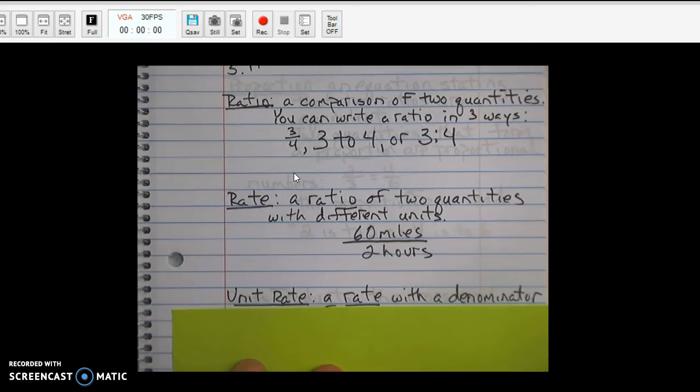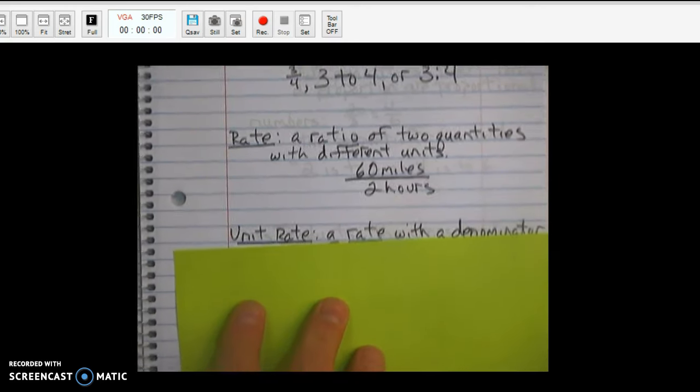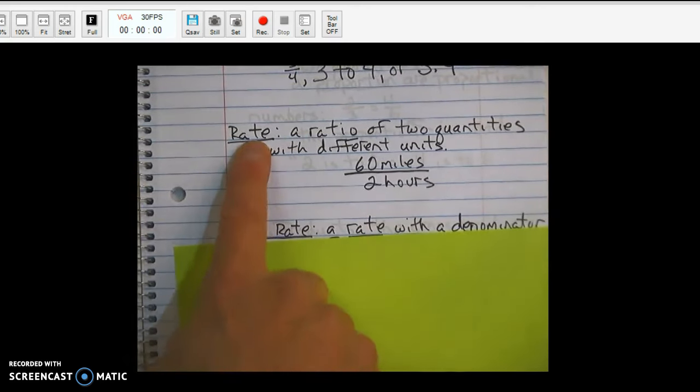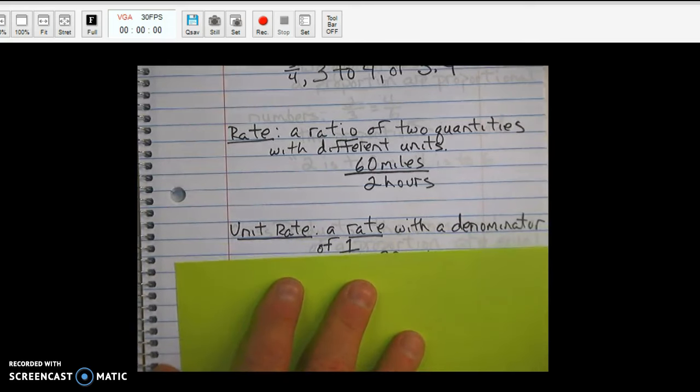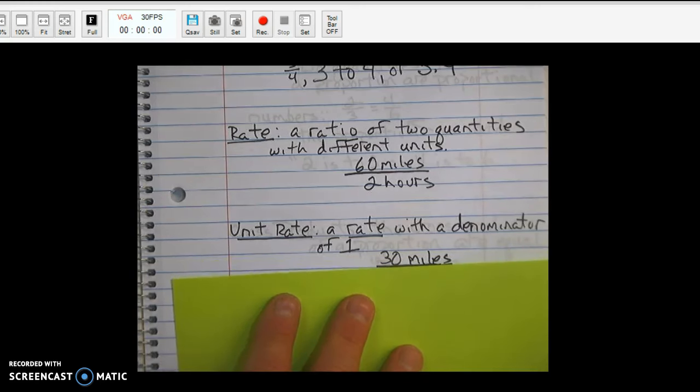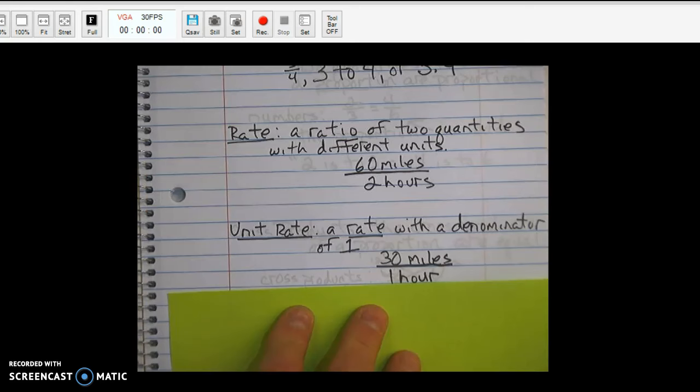Our third term. Unit rate. A rate. Okay. A rate with a denominator of one. Okay. So, 30 miles in one hour. 30 miles to one hour. Okay. 30 to one.